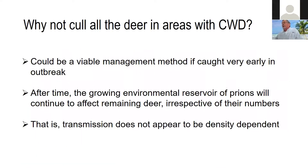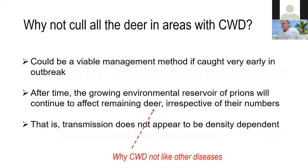One solution suggested by many is to go out and shoot all the deer. This is a viable management strategy very early in the onset of a CWD event. However, because prions accumulate in the environment, there's a growing environmental reservoir of prions that will continue to affect remaining deer irrespective of how many there are — so it doesn't appear to be density dependent.